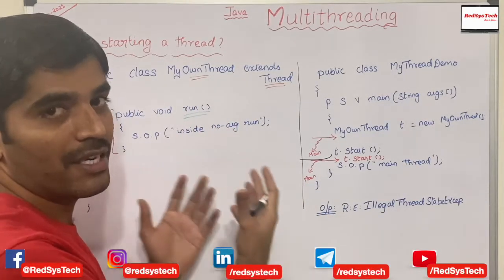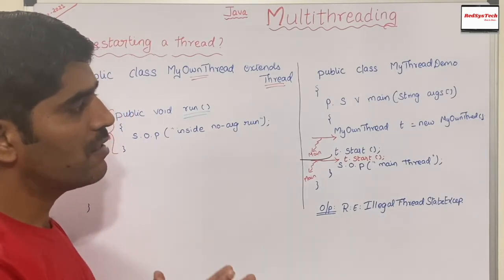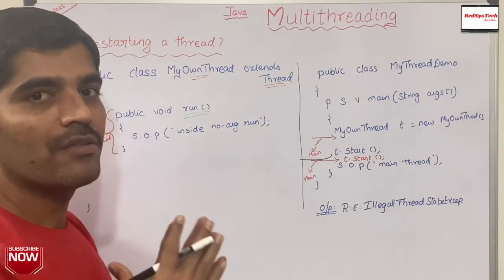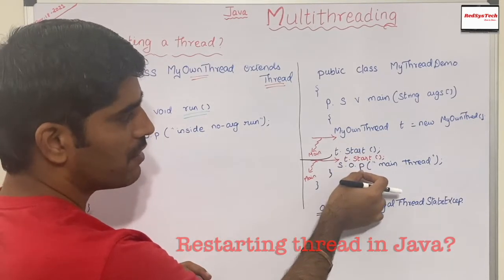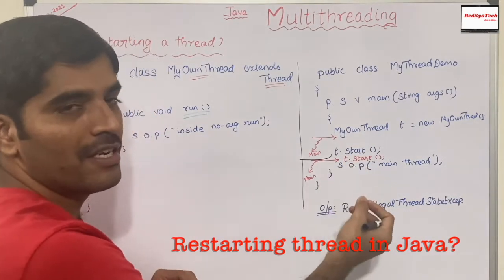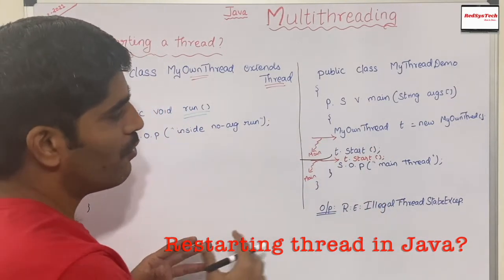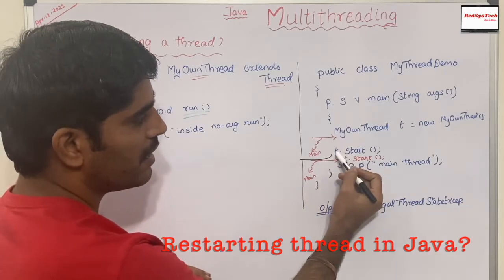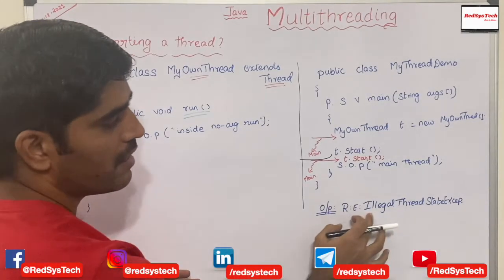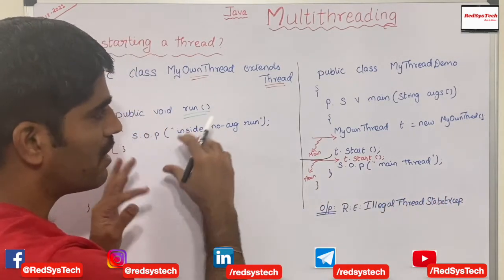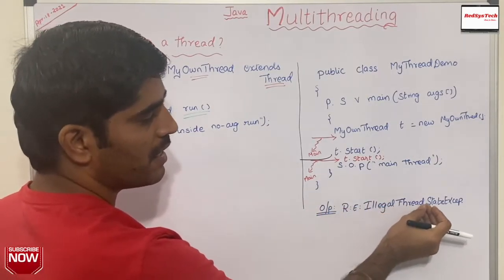In Java, the same thread cannot be restarted. If someone asks whether it is possible to restart the same thread, you say no. If they ask what happens when you try, calling t.start() twice — starting the same thread again — will throw a runtime exception: IllegalThreadStateException. The state of the thread is illegal because it no longer exists, so that is why it throws that runtime exception.